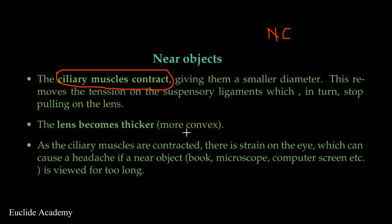As the ciliary muscles are contracted, there is strain on the eye. If you've observed, looking at something pretty close to your eye can give you a slight headache. For example, reading a book very close, looking through a microscope for a long time, or a computer screen viewed very close to your eye can cause strain and might cause a headache if you are viewing or reading for too long. So there will be strain on the eye.